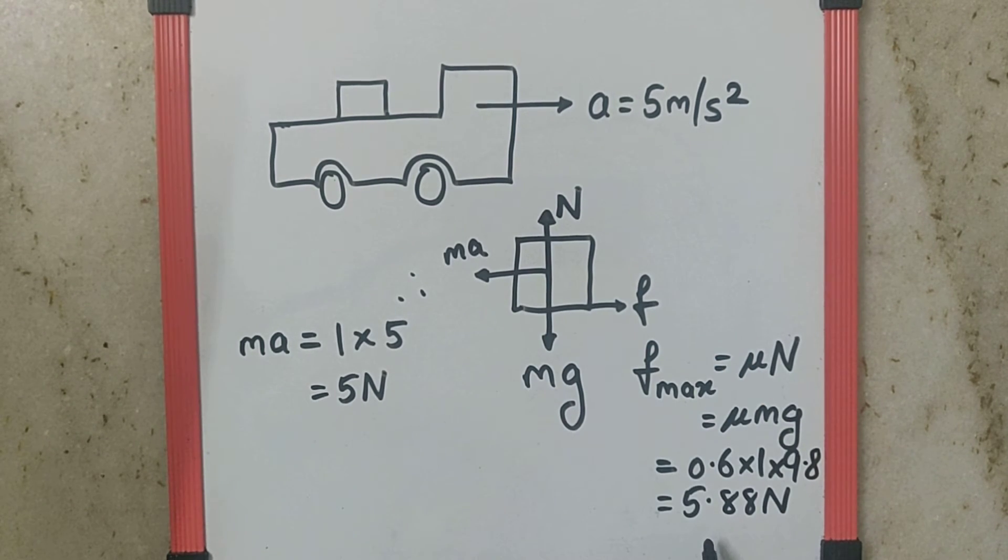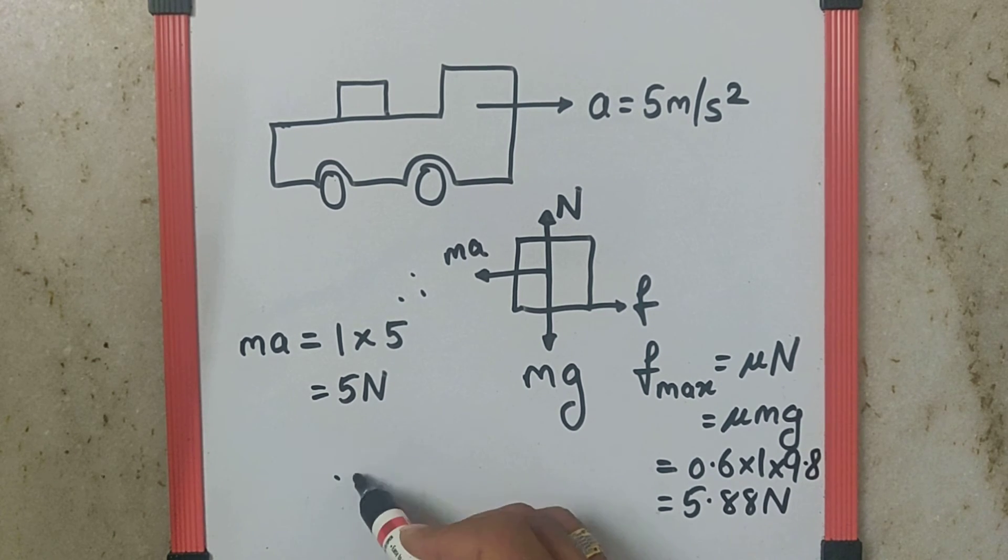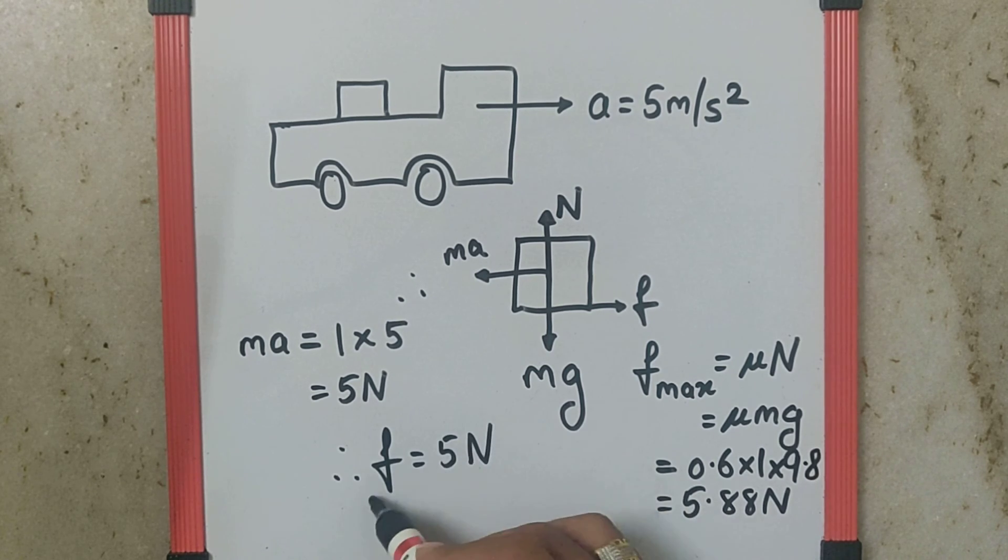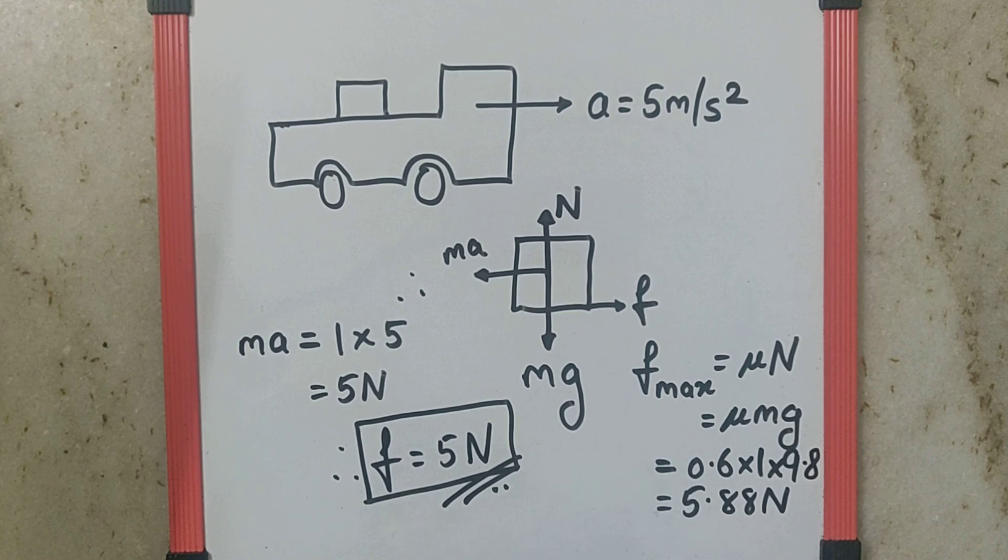which is less than the maximum friction force. Since we know friction is a self-adjusting force, it always goes for the smaller value and adjusts itself to 5N, and that becomes our final answer.